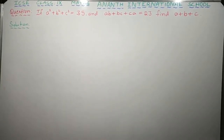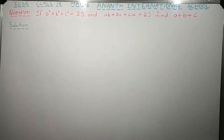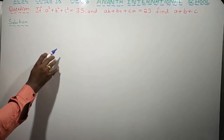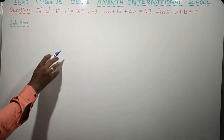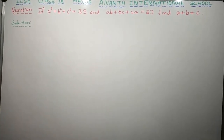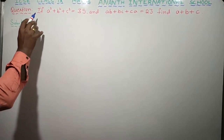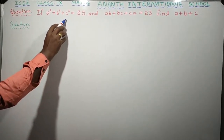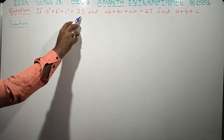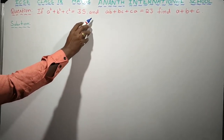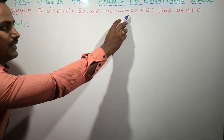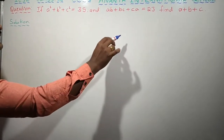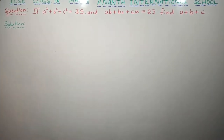Good morning everyone, dear children. Today I am explaining and solving the problems in the expansion lesson. I will read the question: If a squared plus b squared plus c squared is equal to 35 and ab plus bc plus ca is equal to 23, find the value of a plus b plus c, children.